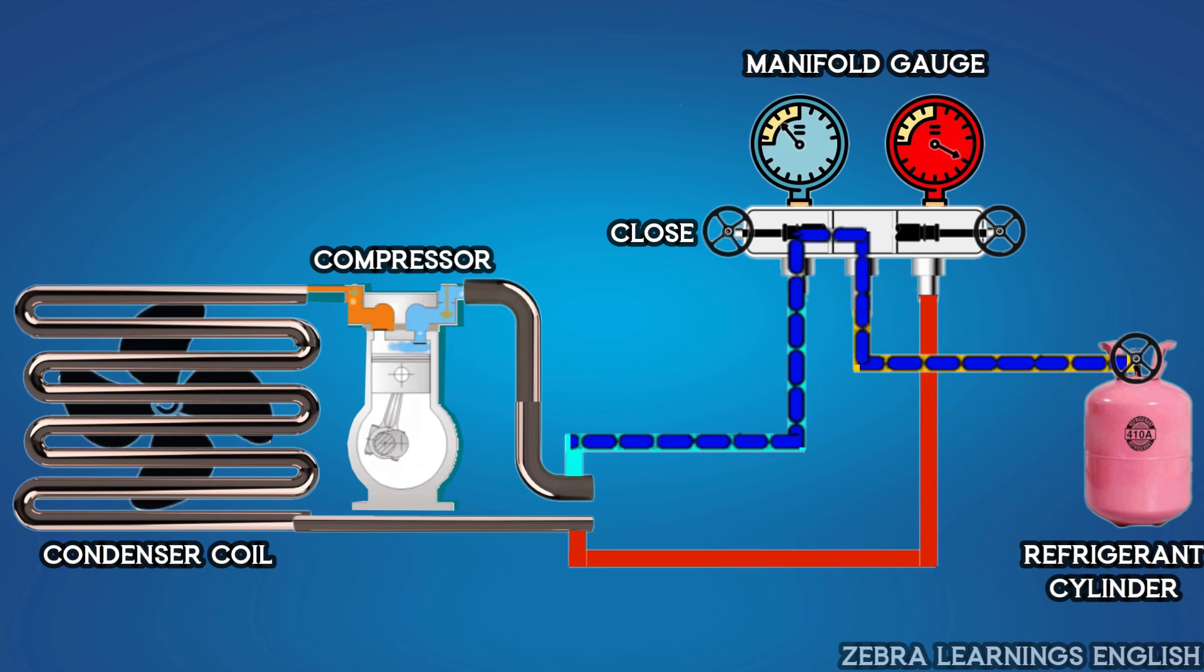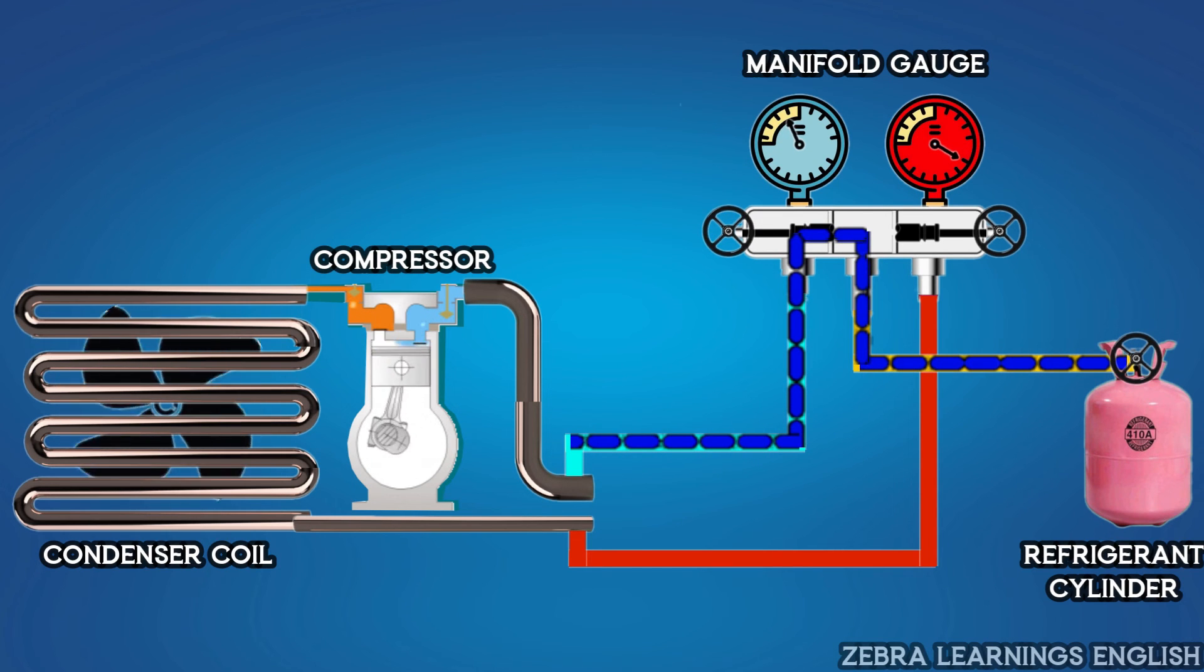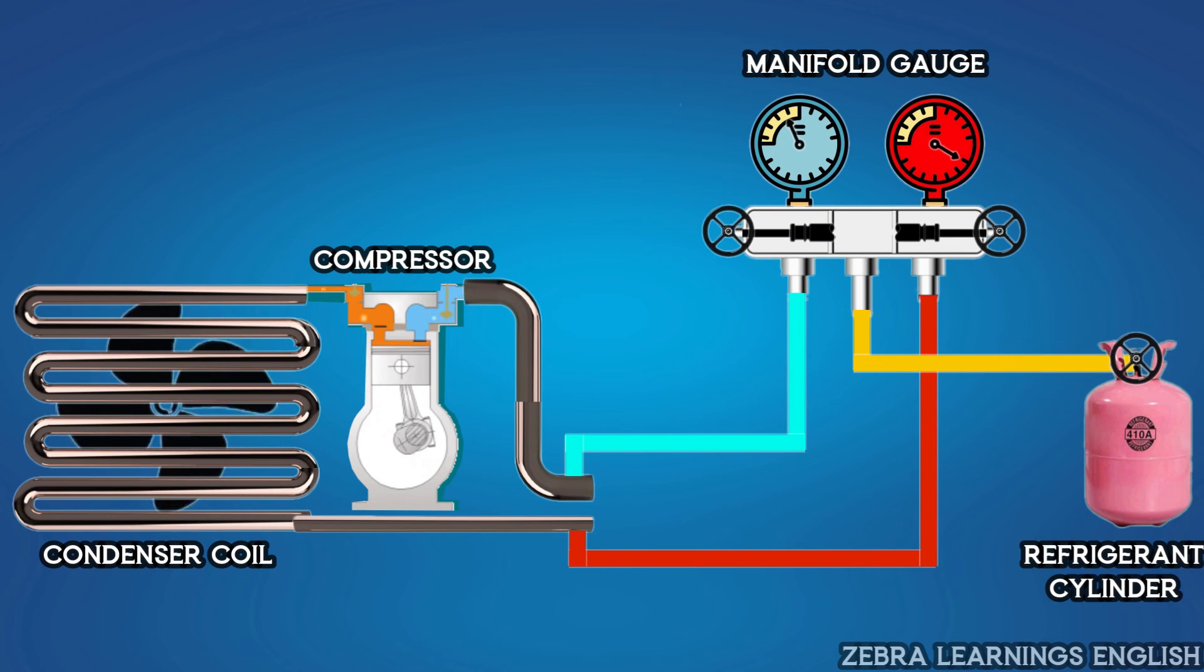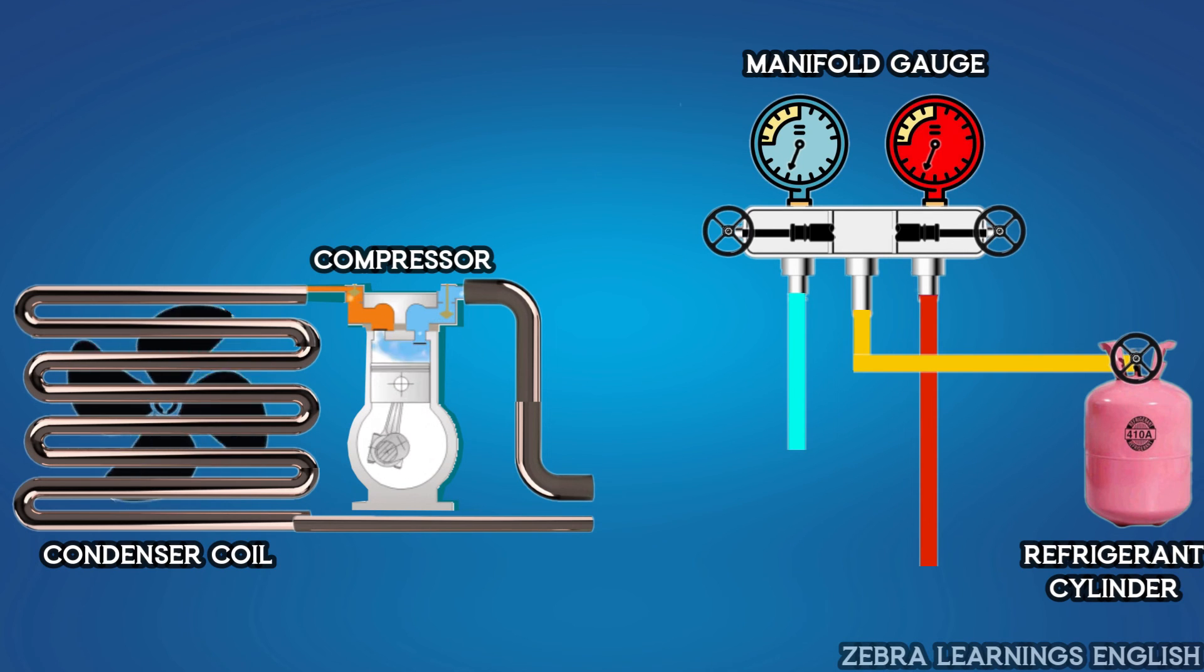Close the refrigerant cylinder valve and low-pressure valve after reaching the required pressure in the suction and discharge line. Then, remove the manifold gauge from the unit. That's all, the refrigerant charging method.